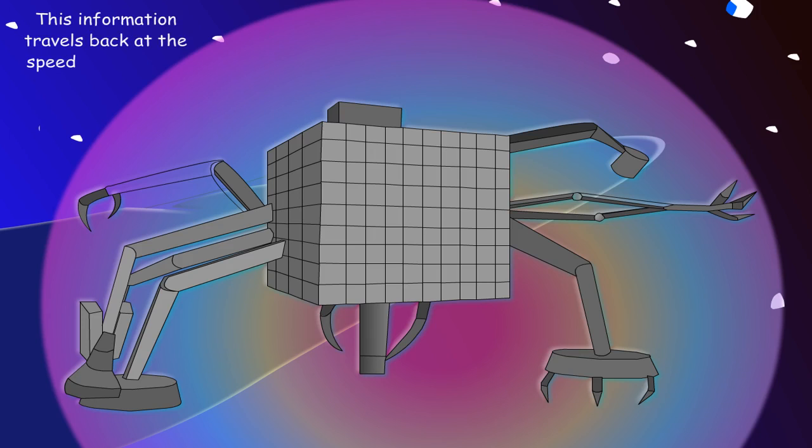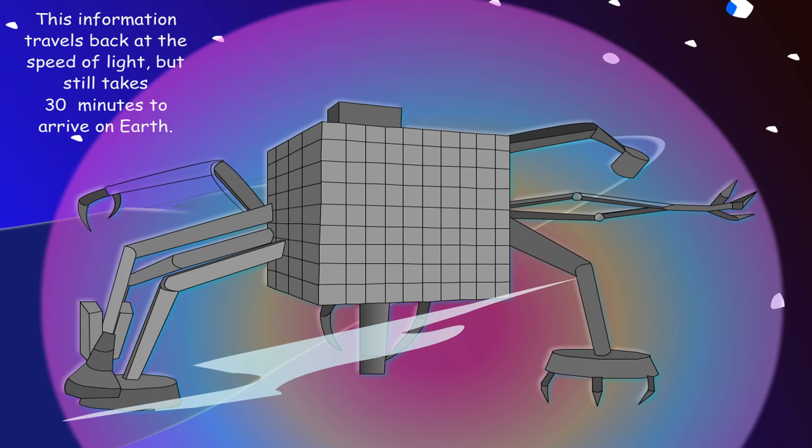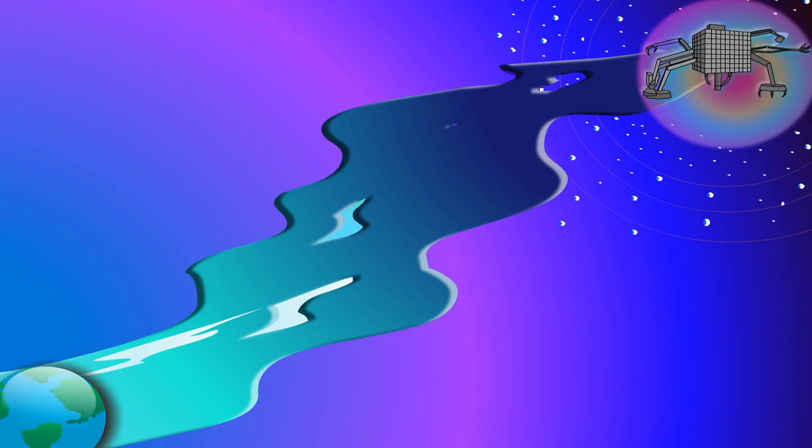This information travels back at the speed of light, but still takes 30 minutes to arrive on Earth. The speed of light is 299,792 kilometers per second.